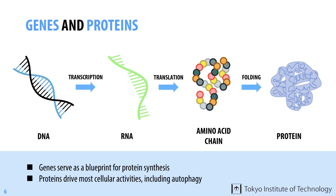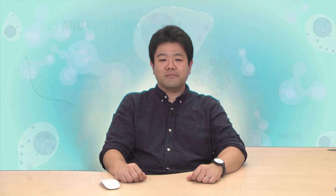Autophagy can therefore be thought of as a complex mechanism that involves many proteins and other molecules that work together. The key message is that our cells have genes that direct the production of specific proteins required for autophagy.